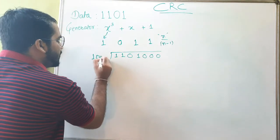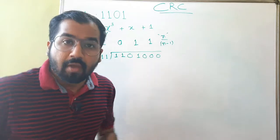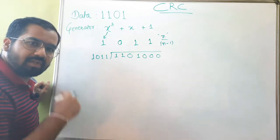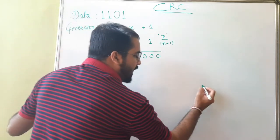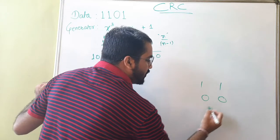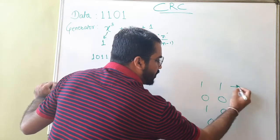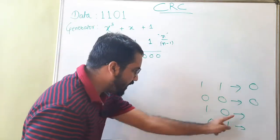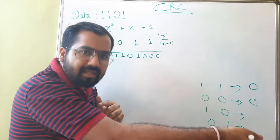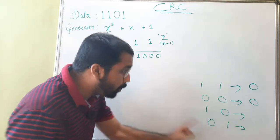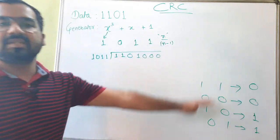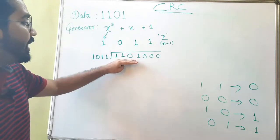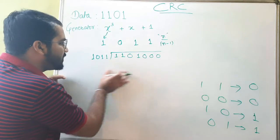Now divide the extended data by the generator bits 1 0 1 1 using XOR at each step. The rule of XOR is simple: if the two bits are the same, the result is 0; if they are dissimilar — one is 1 and the other is 0 — the result is 1. This XOR behavior is followed throughout the entire division procedure.